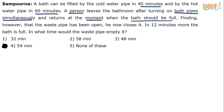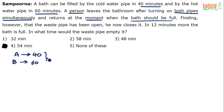When two pipes are working together, the time required by both A and B together is AB/(A+B). That's the shortcut. Or you can use 1/A + 1/B. So pipe A takes 40 minutes and pipe B takes 60 minutes. When both are working together, the time required will be AB/(A+B). Simplify: 40×60 upon 40+60.